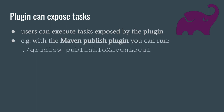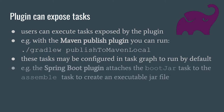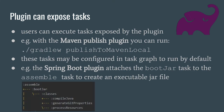For example, with the Maven Publish plugin it exposes a task 'publish to Maven Local'. These tasks may also be configured in the Gradle task graph automatically to run by default. An example of this is the Spring Boot plugin which attaches the boot jar task to the assemble task — so when you run assemble, it's automatically going to run boot jar and create an executable jar file.